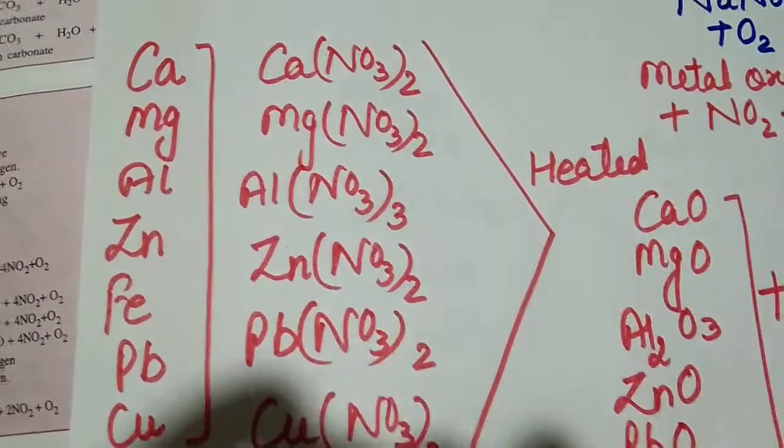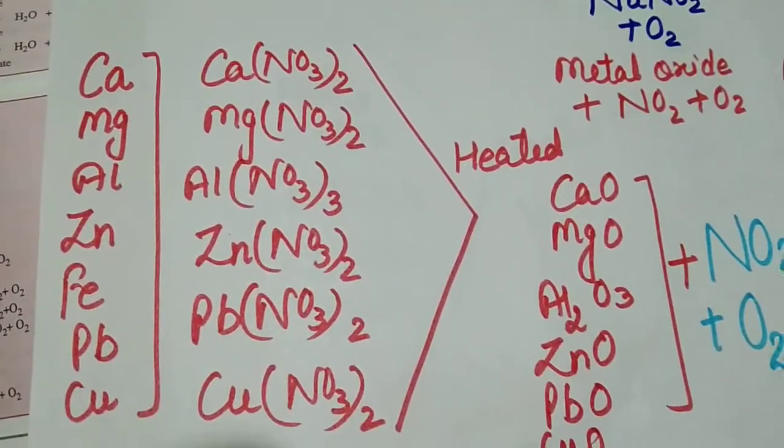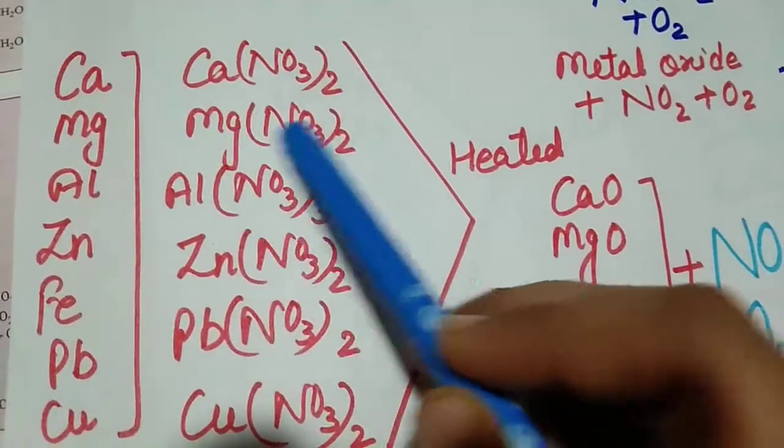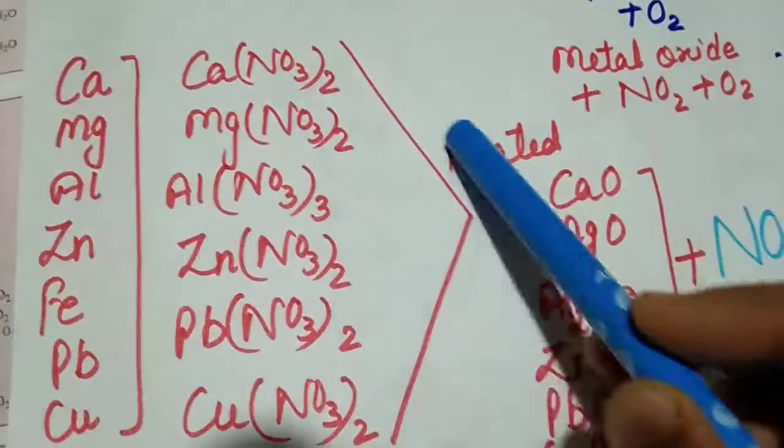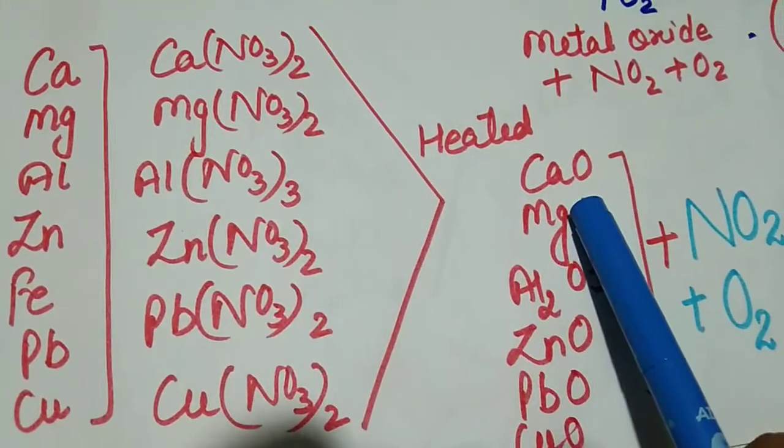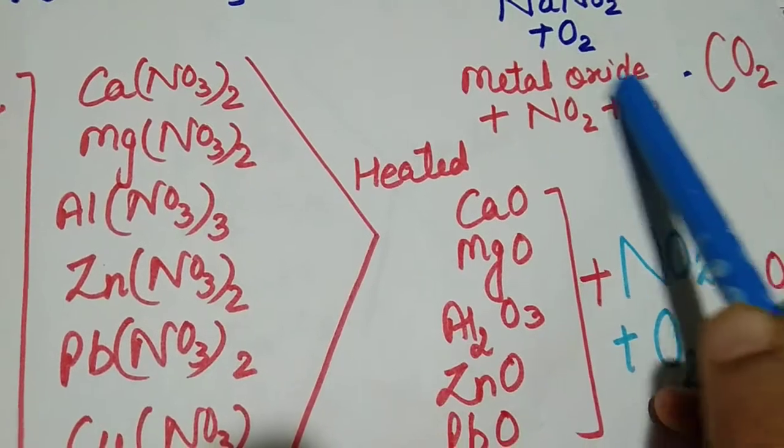You should know their formulae, how to write them. In chemistry most important is how to write a chemical compound. Calcium nitrate Ca(NO3)2, magnesium nitrate Mg(NO3)2, aluminium nitrate Al(NO3)3 up to copper nitrate Cu(NO3)2. When we heat them, they give corresponding metal oxide and two gases.